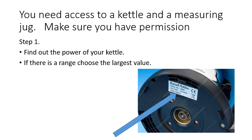At the bottom of the kettle, you'll see a label that says the power of the kettle. Make sure it's empty before you turn it over, and you're going to want the biggest number on your kettle. In this kettle here, you can see it's 3,000 watts. There is a range, but we're going to use the biggest value.